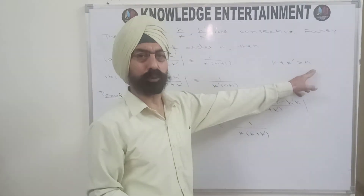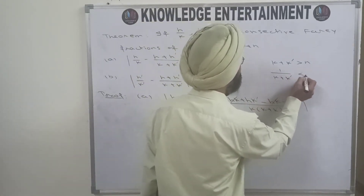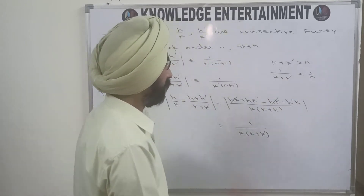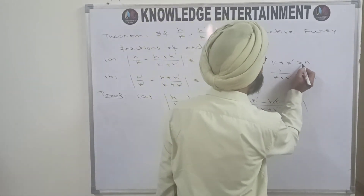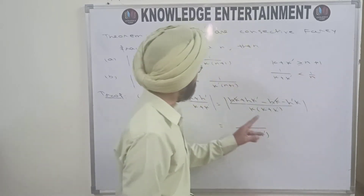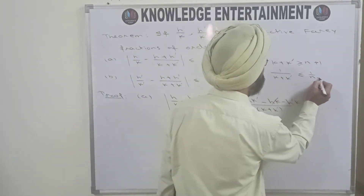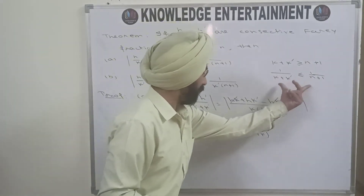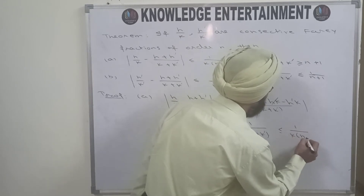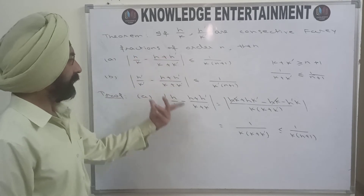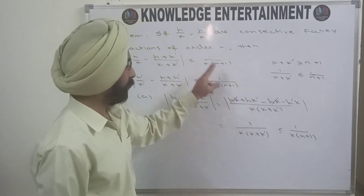Since k and k+k' are positive, removing the modulus changes −1 to 1. Now, k+k' > n and both quantities are positive integers, so k+k' ≥ n+1. Taking reciprocals reverses the inequality: 1/(k+k') ≤ 1/(n+1). Therefore |h/k − (h+h')/(k+k')| = 1/(k(k+k')) ≤ 1/(k(n+1)), proving part (a).